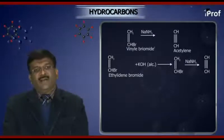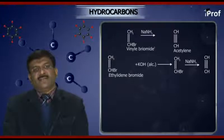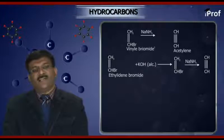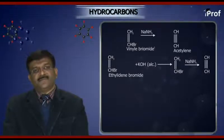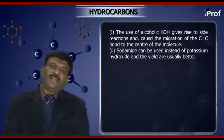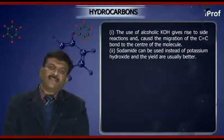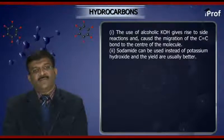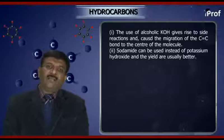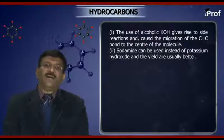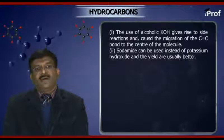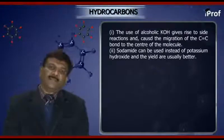Ethylidene dibromide, or ethylidene bromide, if it reacts with alcoholic KOH, gives CH2=CHBr, which will further react with NaNH2 to give CH≡CH. The use of alcoholic KOH gives rise to side reactions and causes migration of the C=C double bond to the center of the molecule. Sodamide can be used instead of potassium hydroxide, and the yield obtained by this method is usually better.